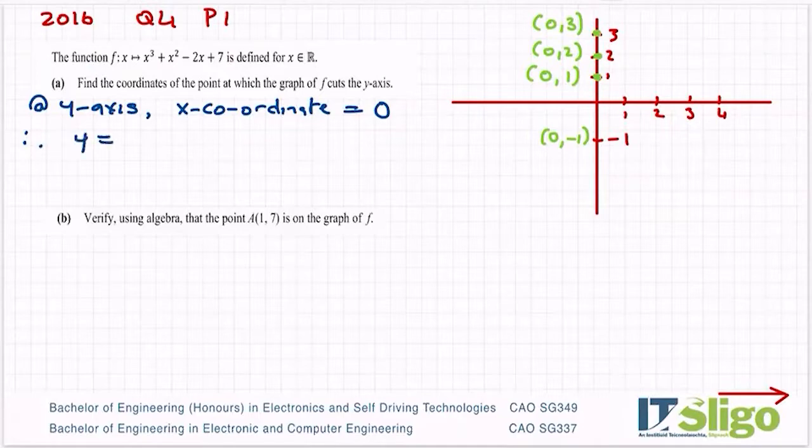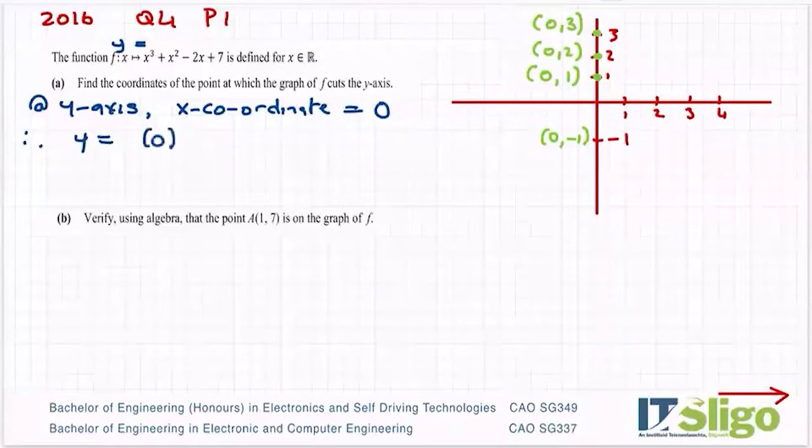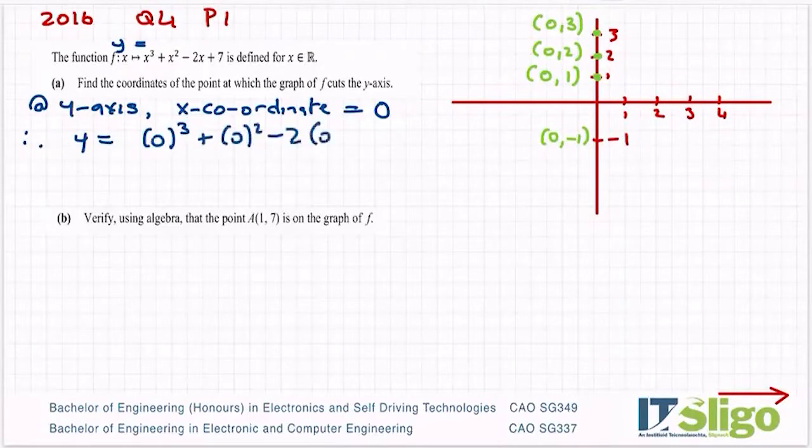So f(x) is y. In functions, f(x) is y. So x is 0³ + 0² - 2 times 0 + 7. So the y-coordinate is 7. So I would say 0 comma 7 is the coordinates of where that point cuts through the y-axis, and that's that one done.